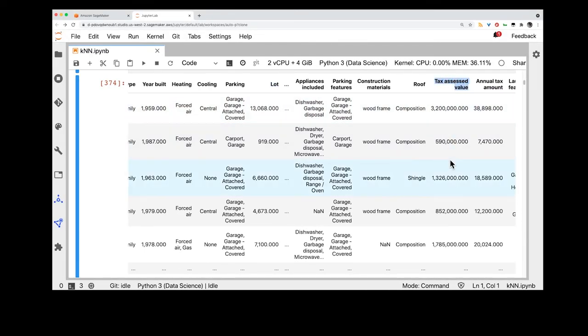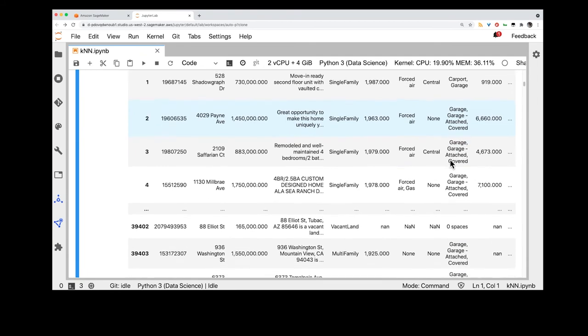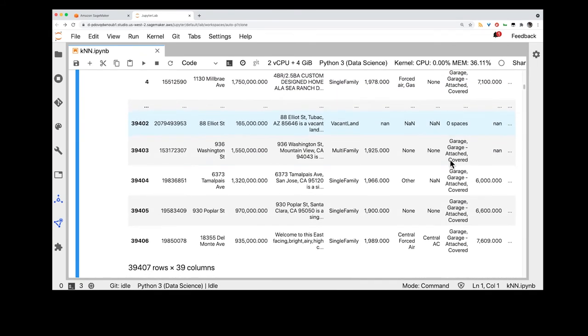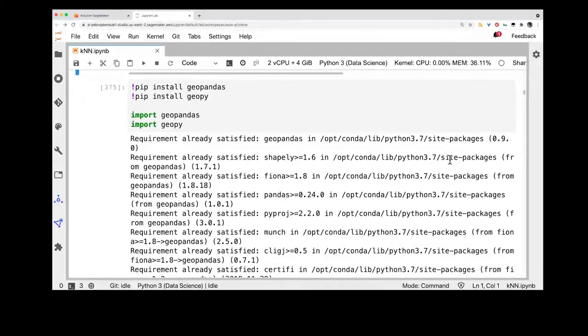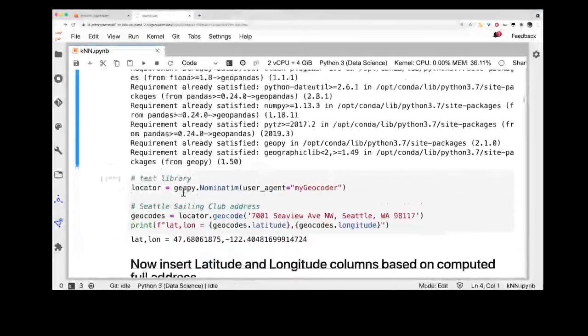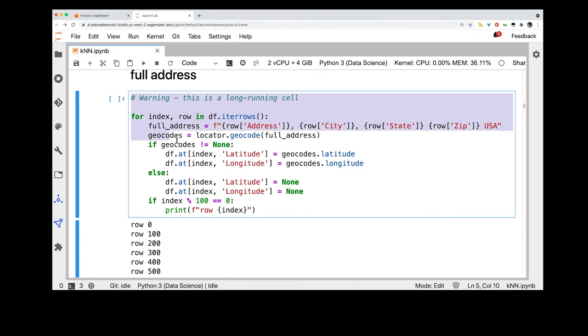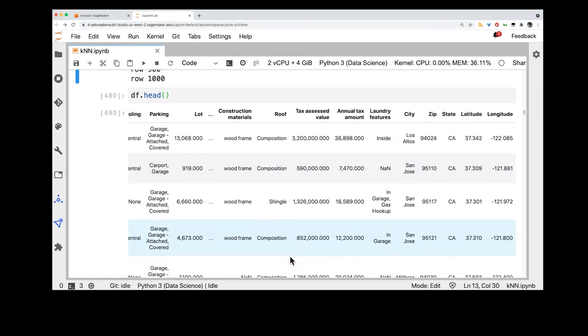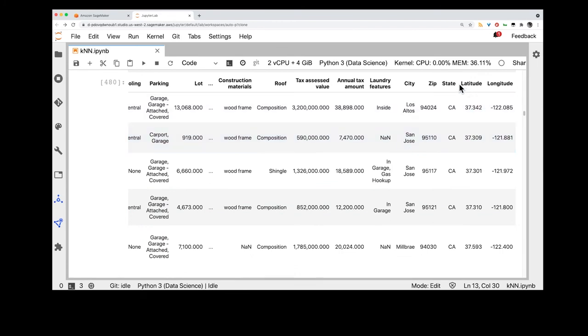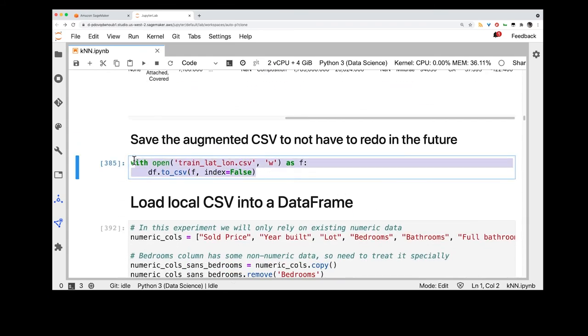KNN feels like an especially well suited algorithm for predicting house prices since this is exactly how the real estate agents determine the list price. They look at the comparables in the neighborhood. Since KNN can only work with numeric data, this gives us an idea of converting the address to a latitude-longitude combo. As it turns out, there's a handy geocoding package in Python called geopy, and here's an example of how it works by converting the address of the Seattle Sailing Club to the corresponding coordinates. We can now run this augmentation cell to insert the lat-lon columns, and after this is done, we can see that these coordinates were in fact added. Now I save the work into an augmented train-lat-lon.csv and move on to additional preprocessing steps.